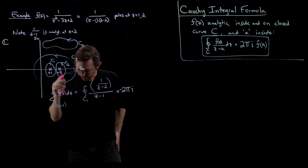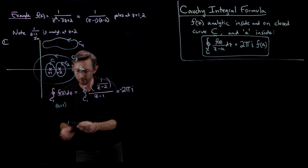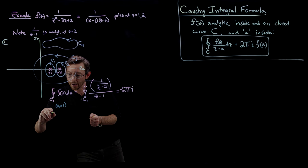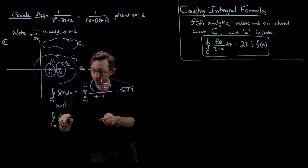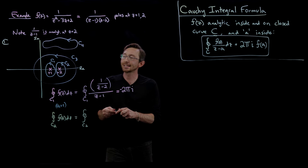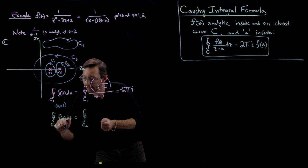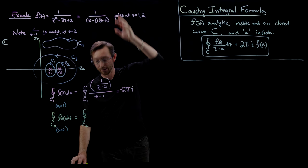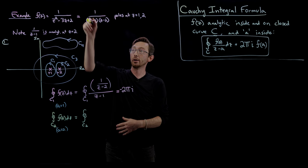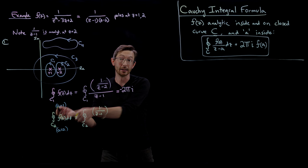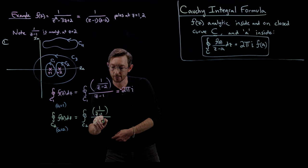That's how you use the Cauchy integral formula. Let's do the same thing for the second contour C2. So the integral around C2 of f of z dz equals the integral around C2. In this case, the point that my singularity occurs at is a equals two. Now I'm going to split this up the opposite way: the part of the function that's analytic at z equals two is one over z minus one, divided by z minus two. Now I can use the Cauchy integral formula.